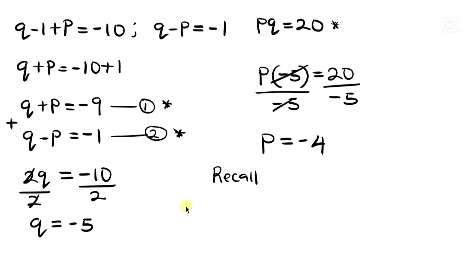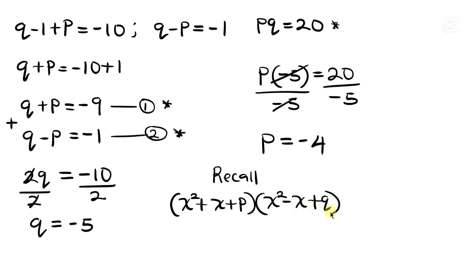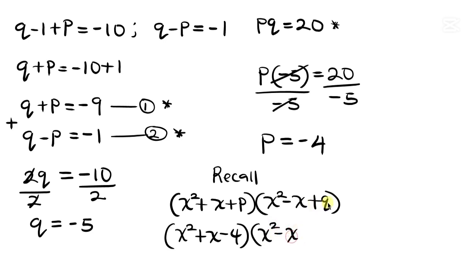Recalling the factorization, we substitute p equals negative 4 and q equals negative 5 to get (x squared plus x minus 4)(x squared minus x minus 5) equals 0. This gives us two cases: x squared plus x minus 4 equals 0, and x squared minus x minus 5 equals 0.